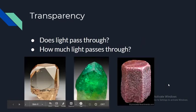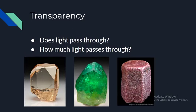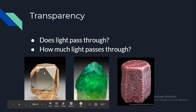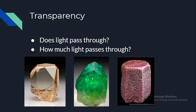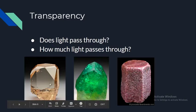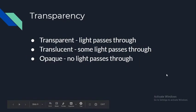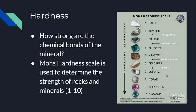Transparency is another category for testing. You always look to see how much light passes through. If no light passes through, it's opaque. If some light passes through, it is translucent. And if a lot of light passes through, then it is transparent.